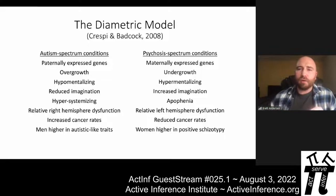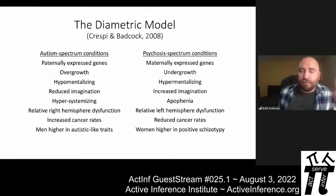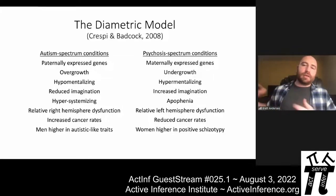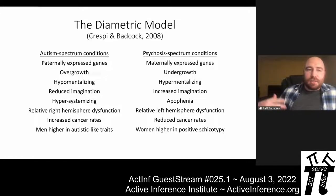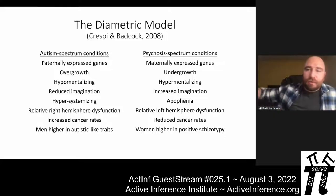The best evidence for the diametric model is pointing out all the diametrically related characteristics on either side of this continuum. With autism spectrum conditions: paternally expressed genes promote autism, there's overgrowth especially in infancy, hypomentalizing (reduced attribution of mental states to others), reduced imagination, hypersystemizing, relative right hemisphere dysfunction, increased cancer rates related to genomic imprinting, and a sex difference where men tend to be higher in autistic-like traits and are diagnosed with autism more often.